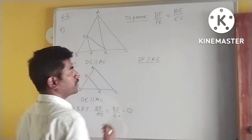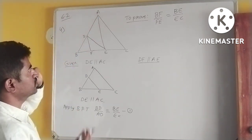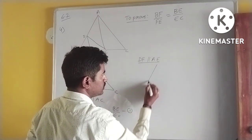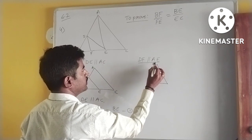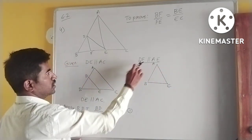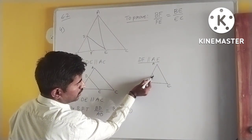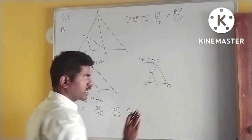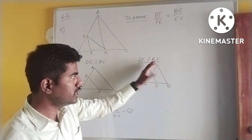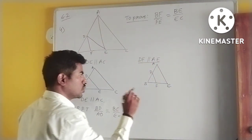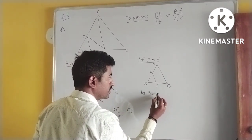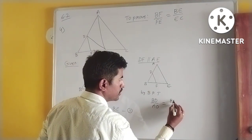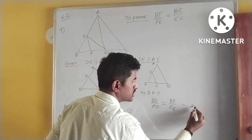Next, DF is parallel to AE. I will draw this triangle separately — triangle ABE, where DF is parallel to AE. Again, if a line is drawn parallel to one side of a triangle, the remaining two sides are divided in the same ratio. So applying BPT: BD by AD is equal to BF by FE. We consider this as Equation 2.